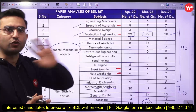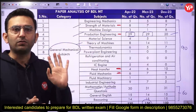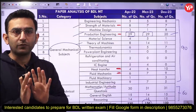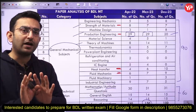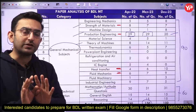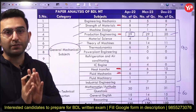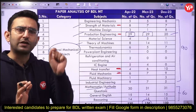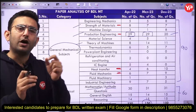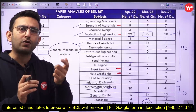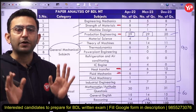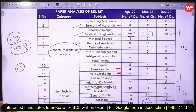In the BEL exam numericals are very few — around five to ten percent — but in the BDL exam there are no numericals at all. The questions are entirely theory-based. If you just have a basic idea of all the subjects, you can directly clear this exam. Questions are very straightforward, taking only five to ten seconds with clear understanding.